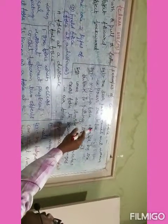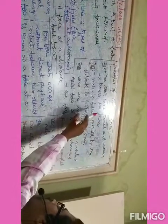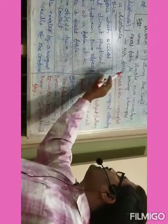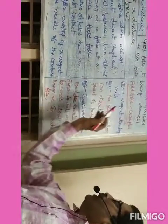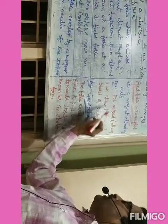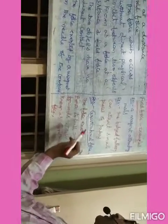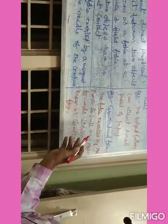Three examples for contact force: toothpaste comes out when we press the tube; muscular force exerted by the bullock in pulling the cart; when we smile, our muscles exert force to bring changes in our face. Three examples for field force: a magnet attracting nails; a bulging balloon attracting small pieces of paper; and gravitational force — the force exerted by the earth to pull any object towards itself.